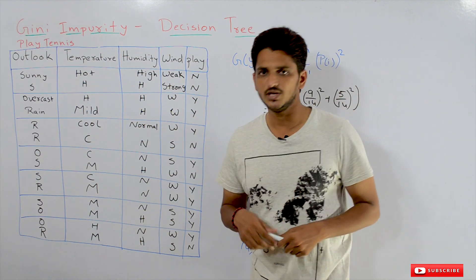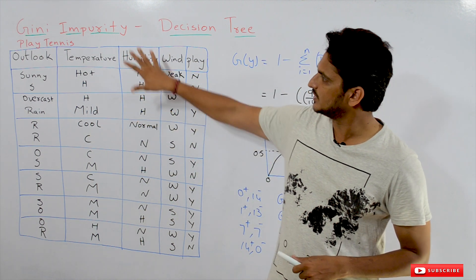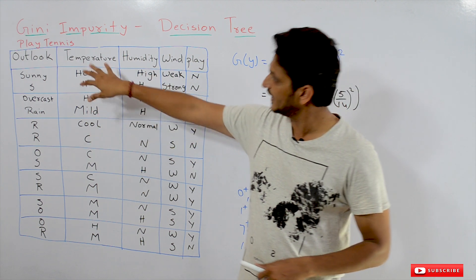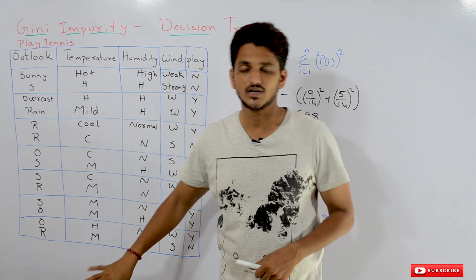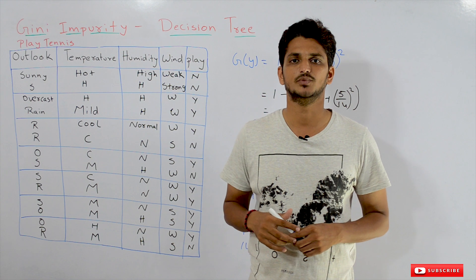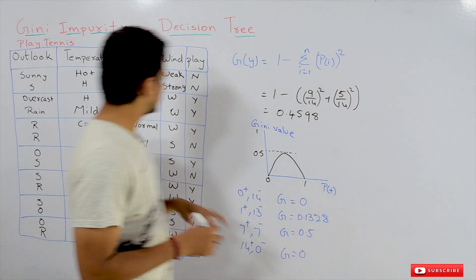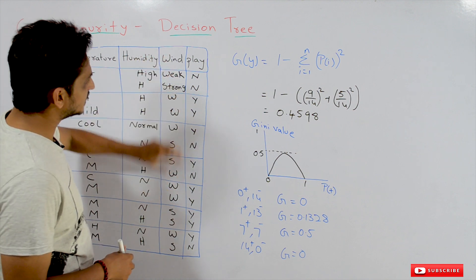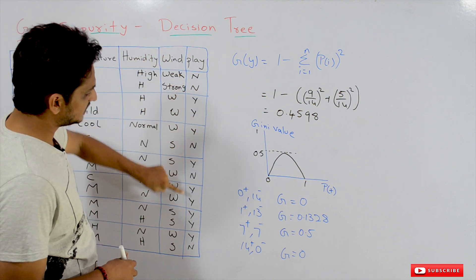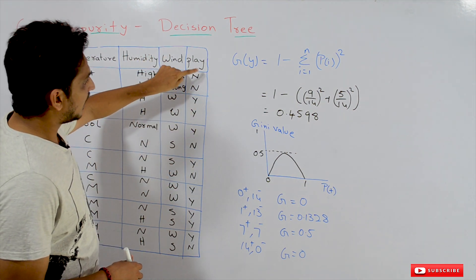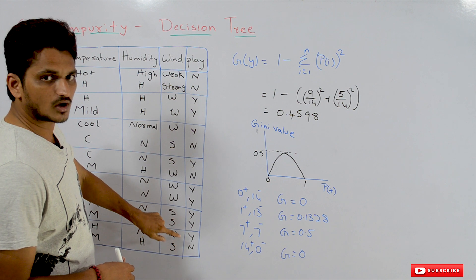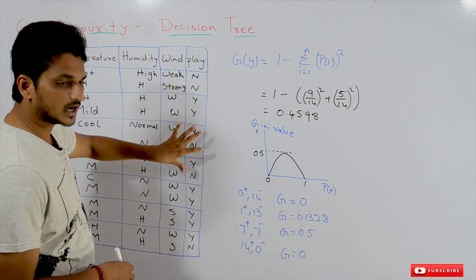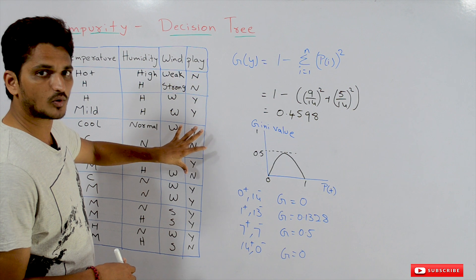Coming to Gini impurity, we will take an example dataset. The example dataset which we are following from our previous classes is the PlayTennis dataset, and we will understand the concept of Gini impurity. In this dataset we are having a binary class classification. We are having 14 data points — 9 positive points and 5 negative points.